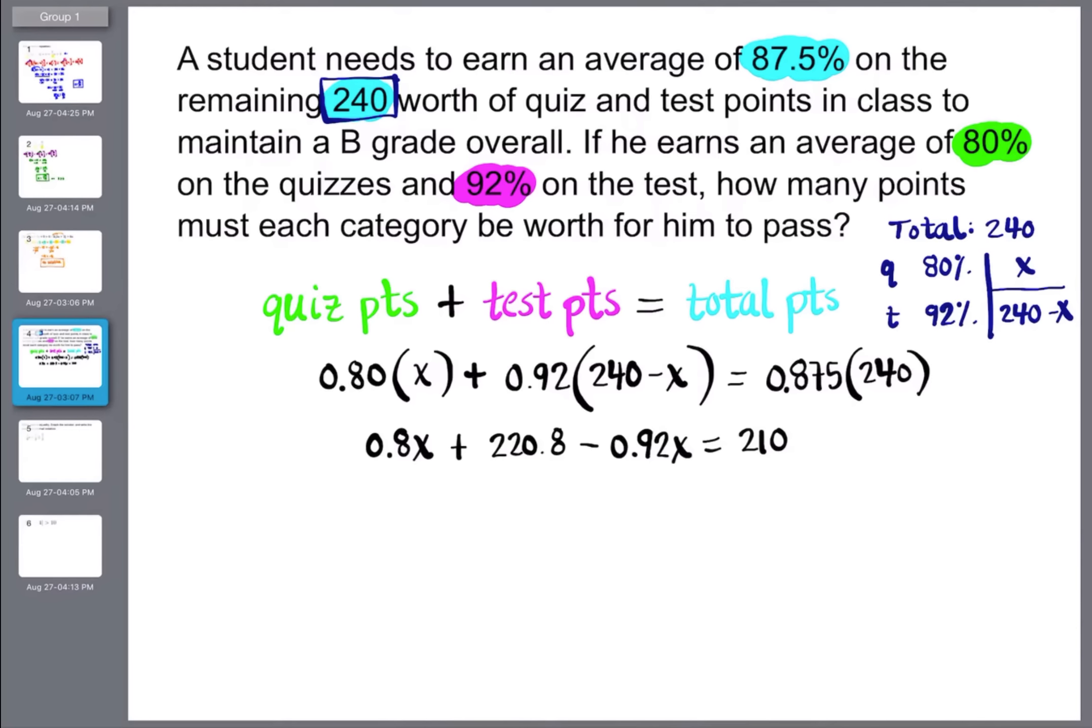All right, and now from here, we have more than two terms on the left, so we can combine. When I combine these two, 0.8 minus 0.92 is negative 0.12x plus 220.8 equals 210. So from here, we would subtract our 220.8 from both sides. So I have negative 0.12x is equal to, if I subtract those two numbers, it should just give me negative 10.8. All right, and then we're going to divide by negative 0.12 on both sides. So I get x is equal to, and I'm pretty sure 108 divided by 12 is going to be 9. So we'll get 90 as our answer here. And again, the negative over negative makes that a positive.